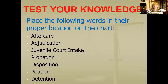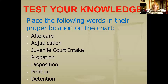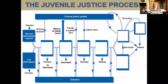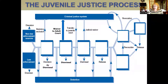adjudication, juvenile court intake, probation, disposition, petition, and detention. Write those seven words down. Once you have those seven words down, keep watching the video and you're going to put those words into where they belong. So hopefully you wrote all seven words down. Now here's the chart — see if you can fit the words in order where they would fit. I'm going to post this diagram online so you can print it and have it in your notes. It's a good way to have this diagram so you understand the order of the steps, which we're going to talk about all semester.